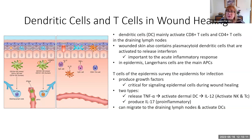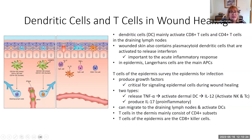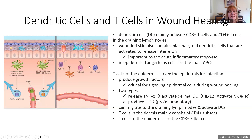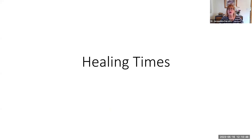Both can also migrate to the draining lymph nodes and activate cells there. Interestingly, the T cells in the epidermis are cytotoxic T cells - they're at the point of entry, which is why they're in the epidermis. Down in the dermis, the T cells hanging out there are the helper T cells, keeping an eye on everything. With that, we are done with the last stage of wound healing.